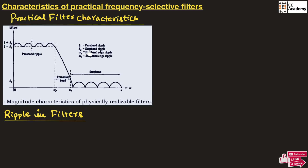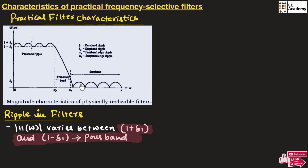So delta 2 is the stop band ripple. In practice, the magnitude of the pass band filter will not be exactly 1 but varies between 1 plus delta 1 and 1 minus delta 1 due to fluctuation. In the stop band, the magnitude is less than delta 2. So this covers the ripples present in the filter.